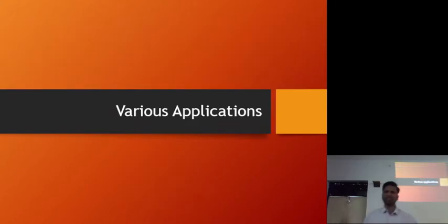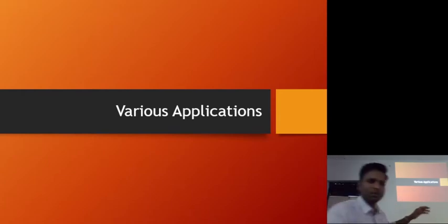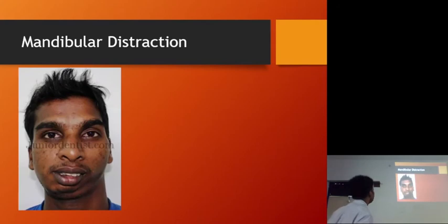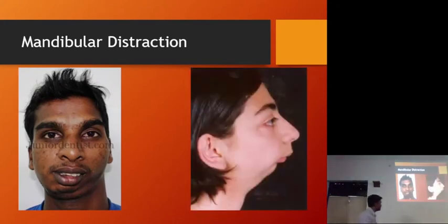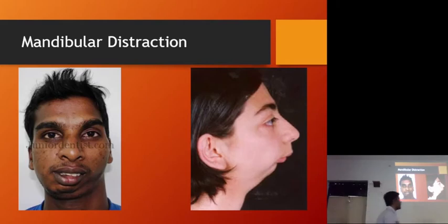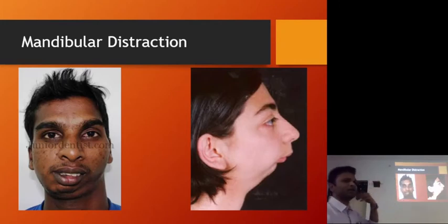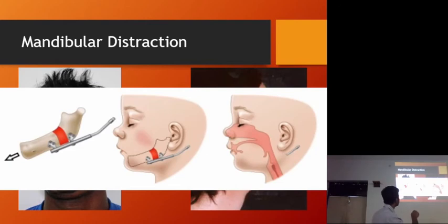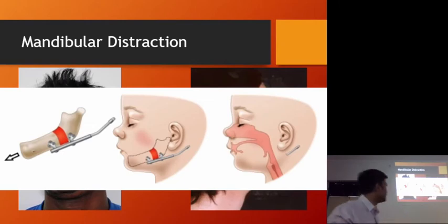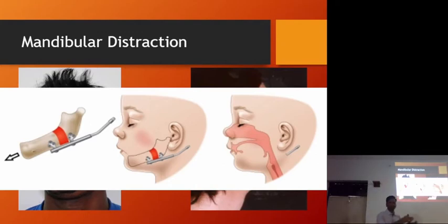Now I'll show you multiple various applications in the maxillofacial region. We have unilateral micrognathia of the mandible and bilateral micrognathia. A patient with a bird face will also have obstructive sleep apnea because the mandible is backward — the tongue falls back into the throat and obstructs the airway. When we perform distraction osteogenesis of the mandible, we bring the mandible forward and pull the tongue forward, opening the airway and relieving obstructive sleep apnea.